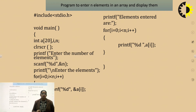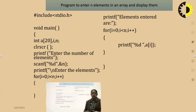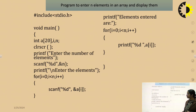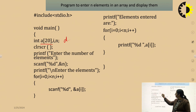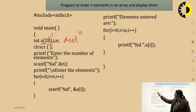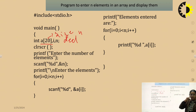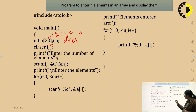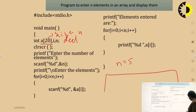The first program is to enter elements into an array and display them. We declare an array of size 20. Then we ask the user how many elements they want to enter — suppose n equals 5. We want to store 5 elements in locations a[0] through a[4]. If our array size is 5, indexing will be 0 to n minus 1, that is 0 to 4.